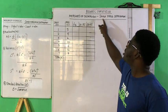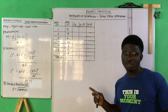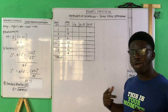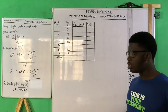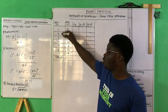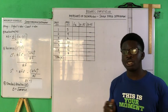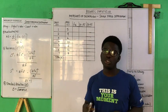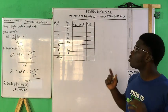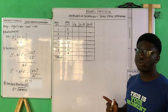These measures are for the simple frequency distribution. I'm sure you could already detect that — this data hasn't been grouped, that's why we're calling it a simple frequency distribution. So let's get down to business.